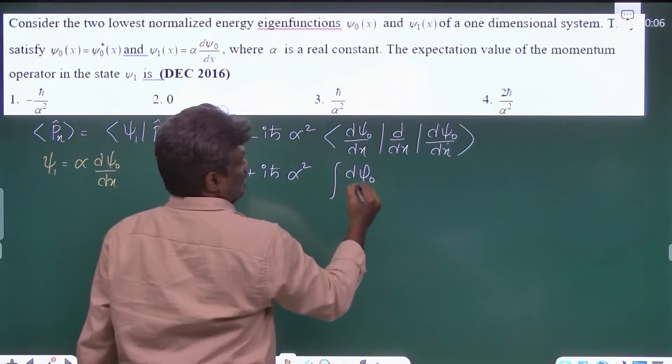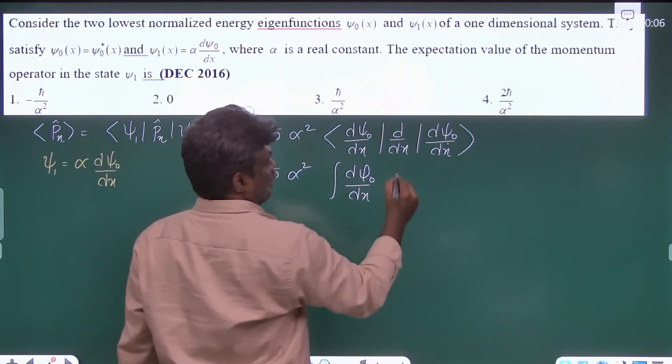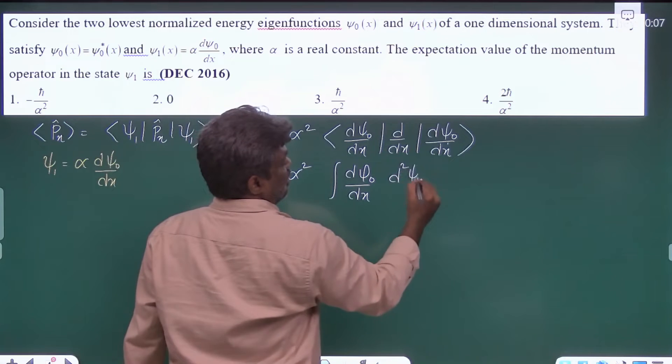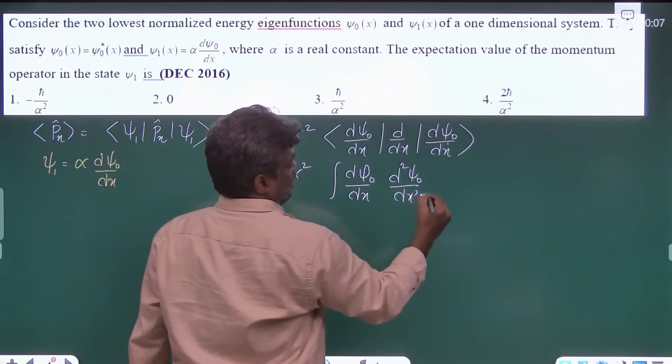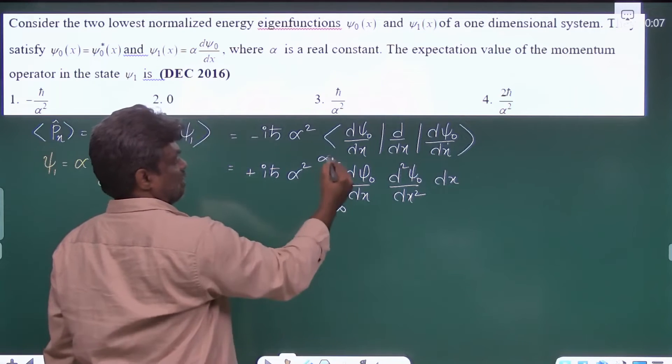d psi0 by dx and this will get d square psi0 by dx square, dx. The integral limits, the default, minus infinity to plus infinity.